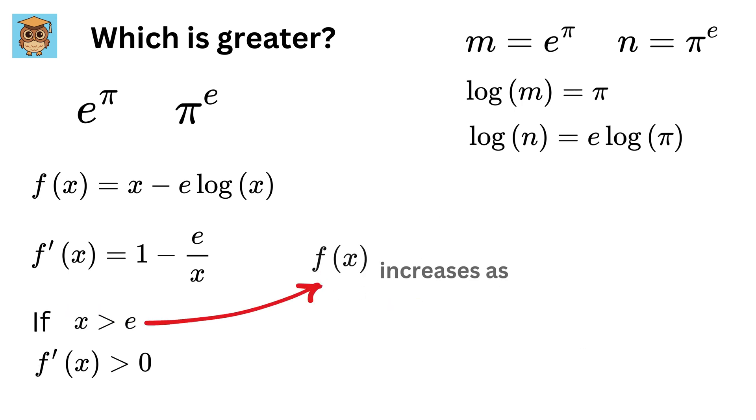This indicates that the original function increases as x increases when x is greater than e. Now we know that π is greater than e, so f(π) will be greater than f(e).